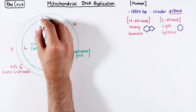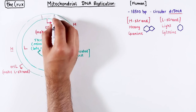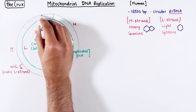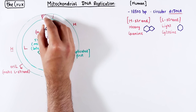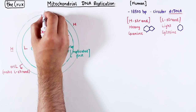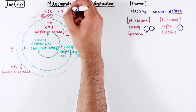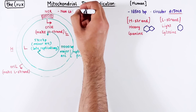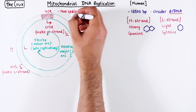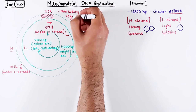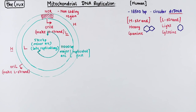The OriH site is within a 1kb non-coding region, which we will talk about in detail shortly. One important caveat is that OriH and OriL are perhaps best thought of as large regions rather than exact spots.